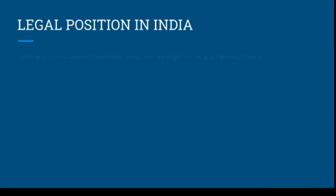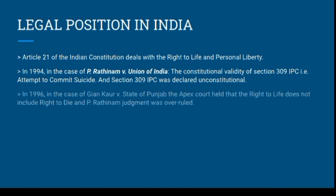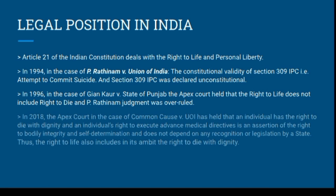Coming towards the legal position in India, we first need to know whether Article 21 of the Indian Constitution, i.e., the right to life and personal liberty, covers in its ambit the right to die or not. The same question came before the Supreme Court in the case of P. Ratinum v. Union of India, where the constitutional validity of Section 309 of IPC, i.e., attempt to commit suicide, was challenged. The petitioner argued that Section 309 was unconstitutional because it violated Articles 14 and 21 of the Constitution. The Supreme Court held that Section 309 is violative of Article 21 only and not of Article 14, and it was reinterpreted that a patient's intention to remove his respirator did not constitute suicide but rather an exercise of his rights.